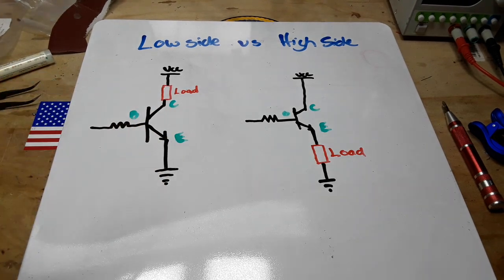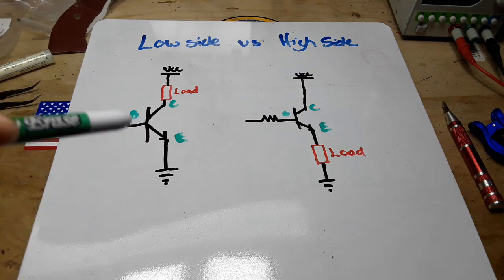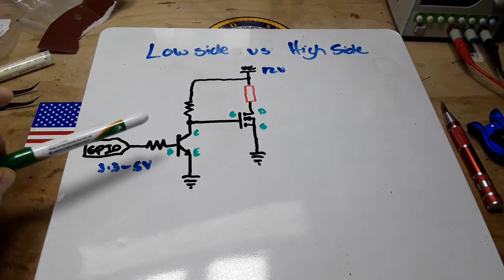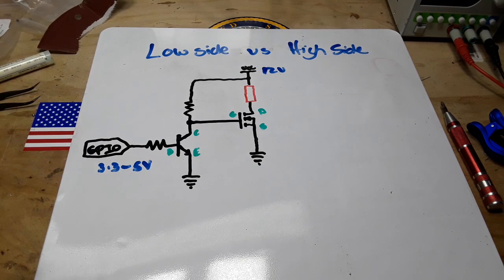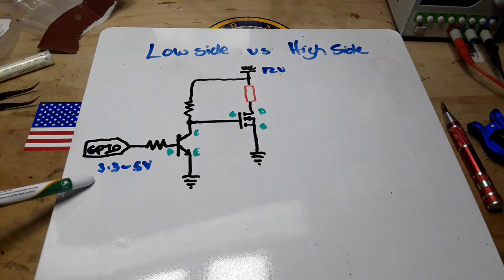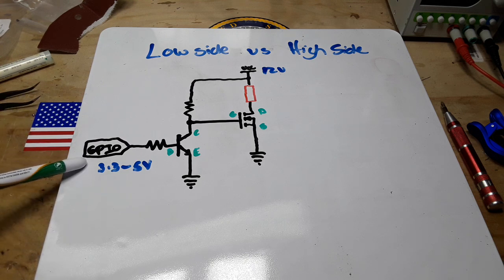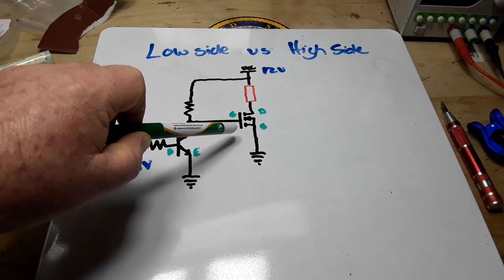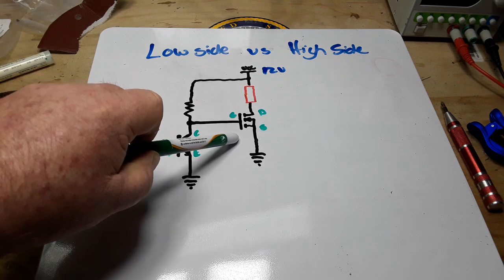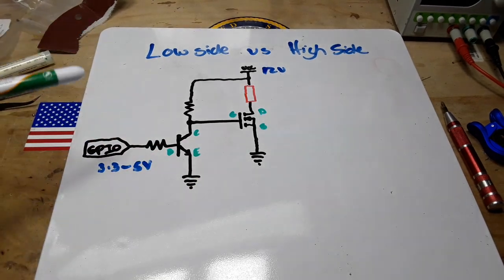Now one other permutation of this is using a driver transistor. So here's our other situation using the driver transistor and we're using that in this case to drive a MOSFET. Now if you don't have a logic level MOSFET which are made to work with microcontrollers, then the 3.3 volt to 5 volts that you're going to get out of your microcontroller GPIO pin is not going to be enough to fully open up your MOSFET.